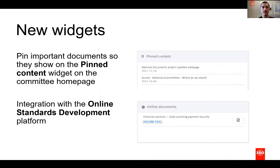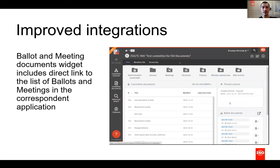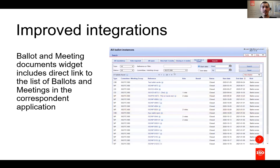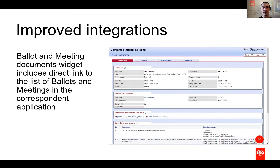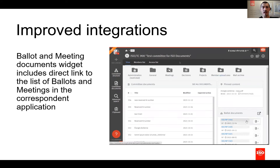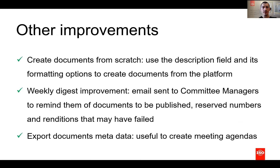Also on the committee's homepage, we introduced two new widgets. One is the pinned content widget, which appears as soon as the committee manager has pinned a document. The aim of this area is to persist documents on the homepage, pretty much like a bookmark but for the entire committee. The second widget is meant for committees currently using the online standards development platform and offers direct access to the collaborative editing tool. We also improved the existing ballot and meeting documents widgets to facilitate navigation to ISO ballots and ISO meetings. By clicking on the icon in the top right corner of these widgets, users are taken to the list of ballots and meetings directly in those applications without having to search again for their committee.